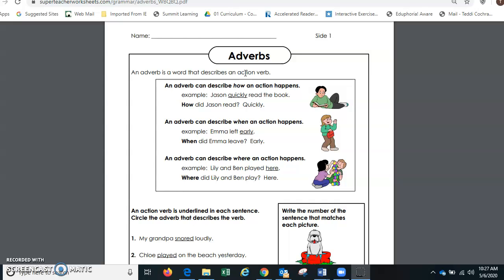One, an adverb describes how an action happens. So I'm jumping. Am I jumping fast? Am I jumping slow? Am I jumping around in a circle? How did Jason read? He read quickly, as in our example right here.